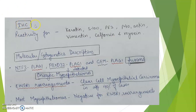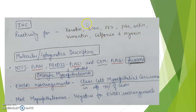On immunohistochemistry, myoepitheliomas show reactivity for keratin, S100, P63, P40, actin, vimentin, calponin, and myosin.